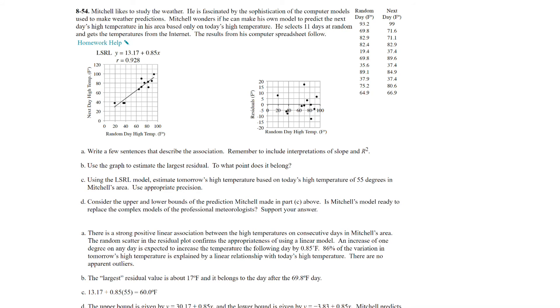Question 54. Mitchell likes to study the weather. He is fascinated by the sophistication of the computer models used to make weather predictions. Mitchell wonders if he can make his own model to predict the next day's high temperature in his area based only on today's high temperature. He selects 11 days at random and gets the temperatures from the internet. The results from his computer spreadsheet follow. So you can see here you're given the LSRL, y equals 13.17 plus 0.85x. You're also given the correlation coefficient r. You have your scatter plot and the LSRL graphed for you, and then you also have your residual plot over here. And then your data, you have your independent variable the random day and the dependent variable the next day.